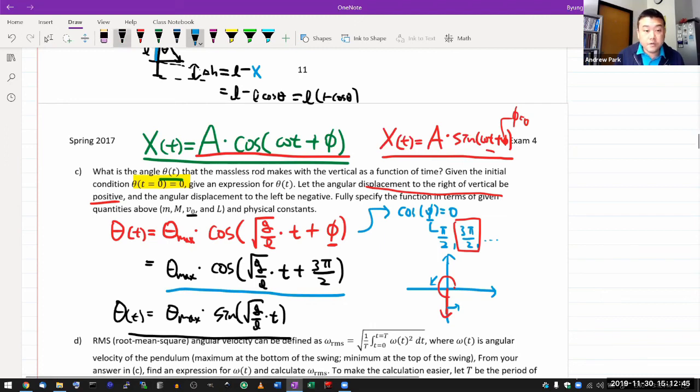And you can actually show that these two expressions are equivalent to each other by using the angle addition formula. So if we use the cosine addition formula, which as a reminder is cosine of alpha plus minus beta is equal to cosine of alpha cosine of beta minus plus the sine of alpha sine of beta.